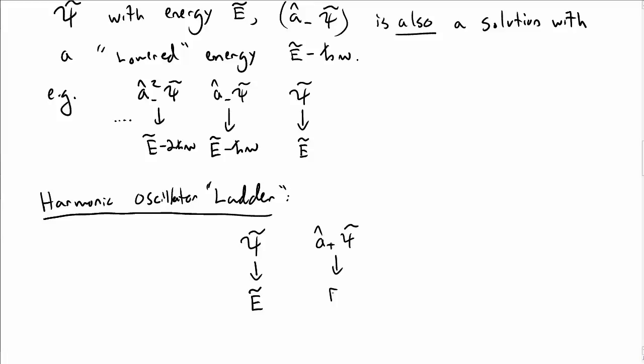If I apply A+ to that, I get a new state with an energy ℏω higher. If I apply that n times, I get another new state with an energy n ℏω times higher and so on.